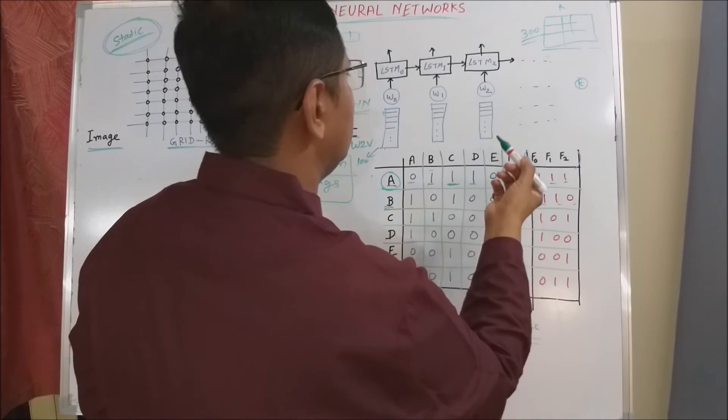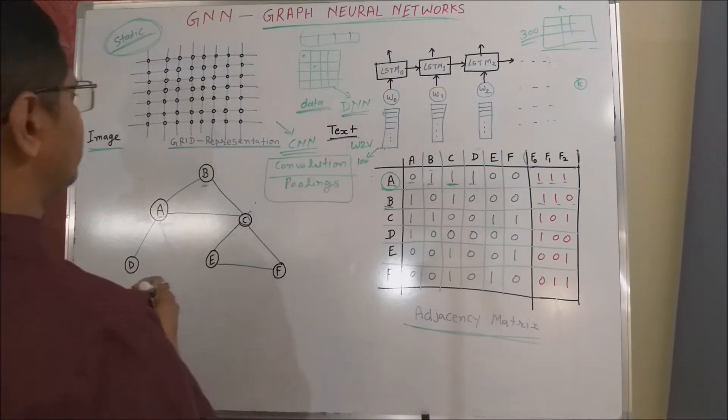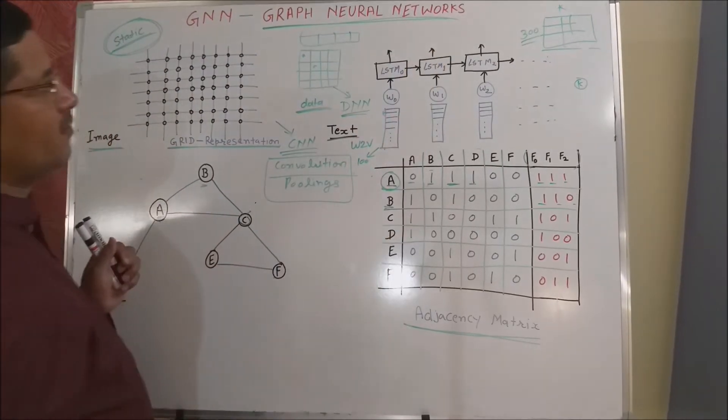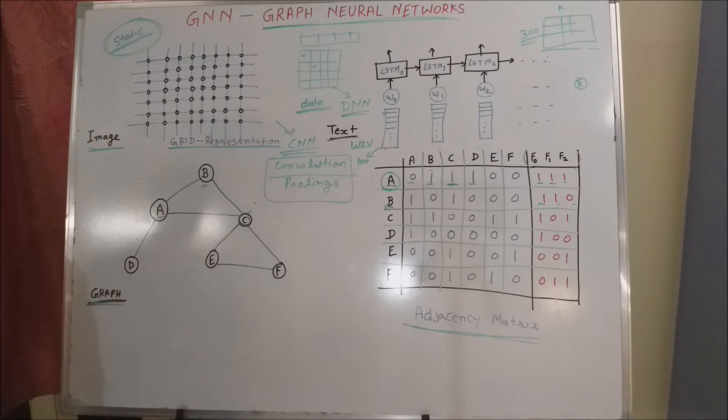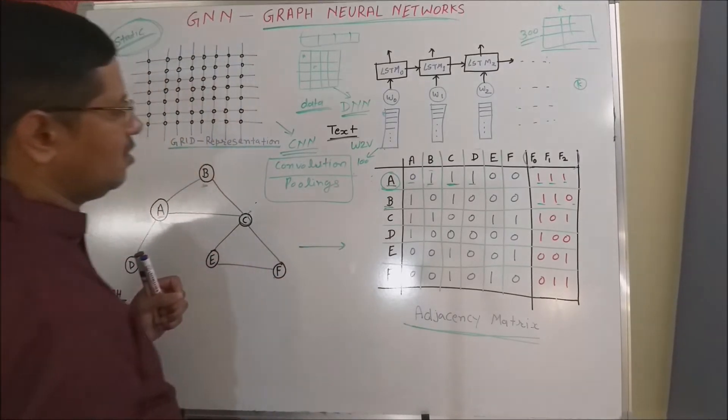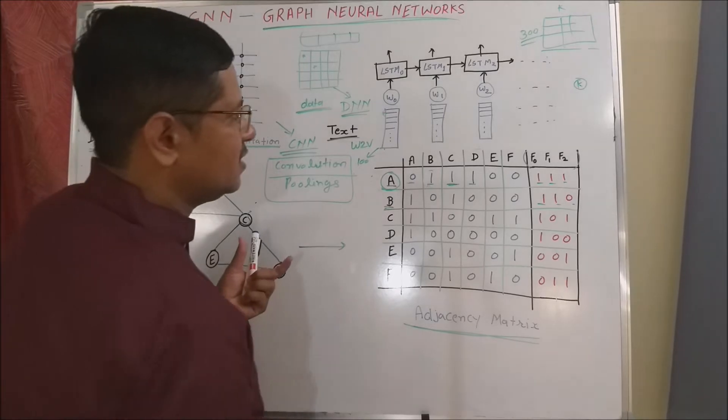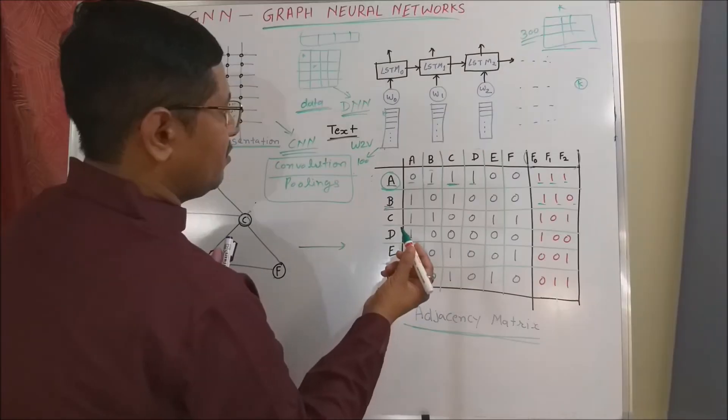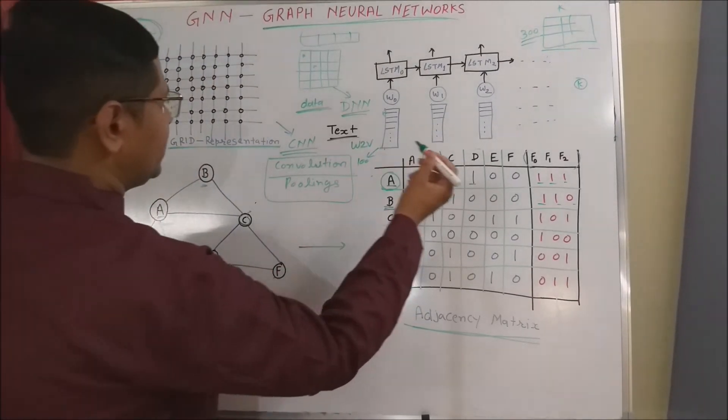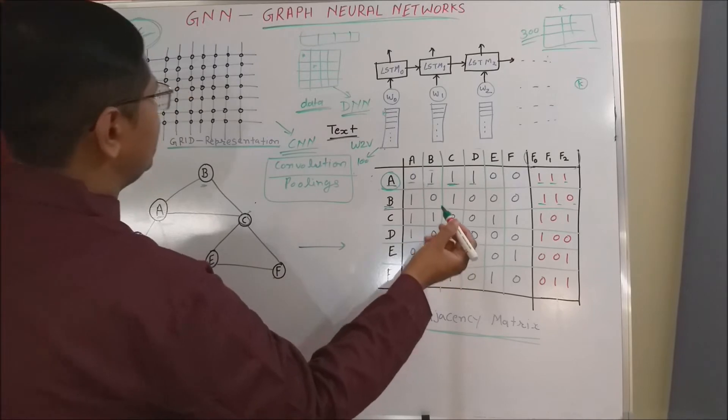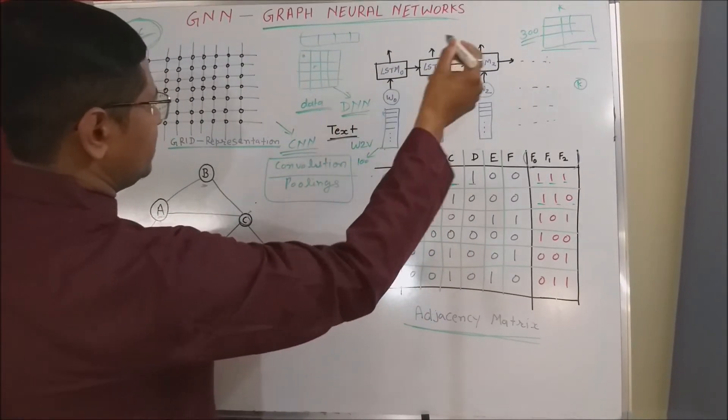Now, try to understand that what will happen if we use or try to feed the graph-based data into the similar kind of deep learning architectures. Then, what will happen? Suppose we have a graph with six nodes. The most or easiest, the most easiest representation of this graph is adjacency matrix.